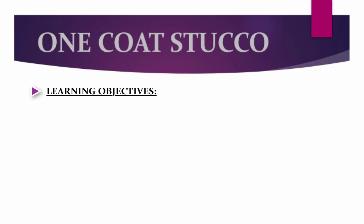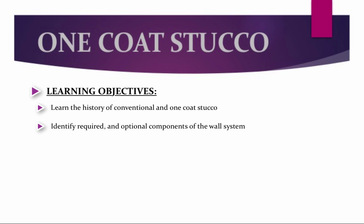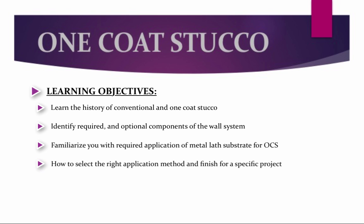Learning Objectives: We will learn the history of conventional and One Coat Stucco. We will identify required and optional components of the wall system. We will familiarize you with required application of metal lath substrate for One Coat Stucco. And we will teach you how to select the right application method and finish for a specific project.